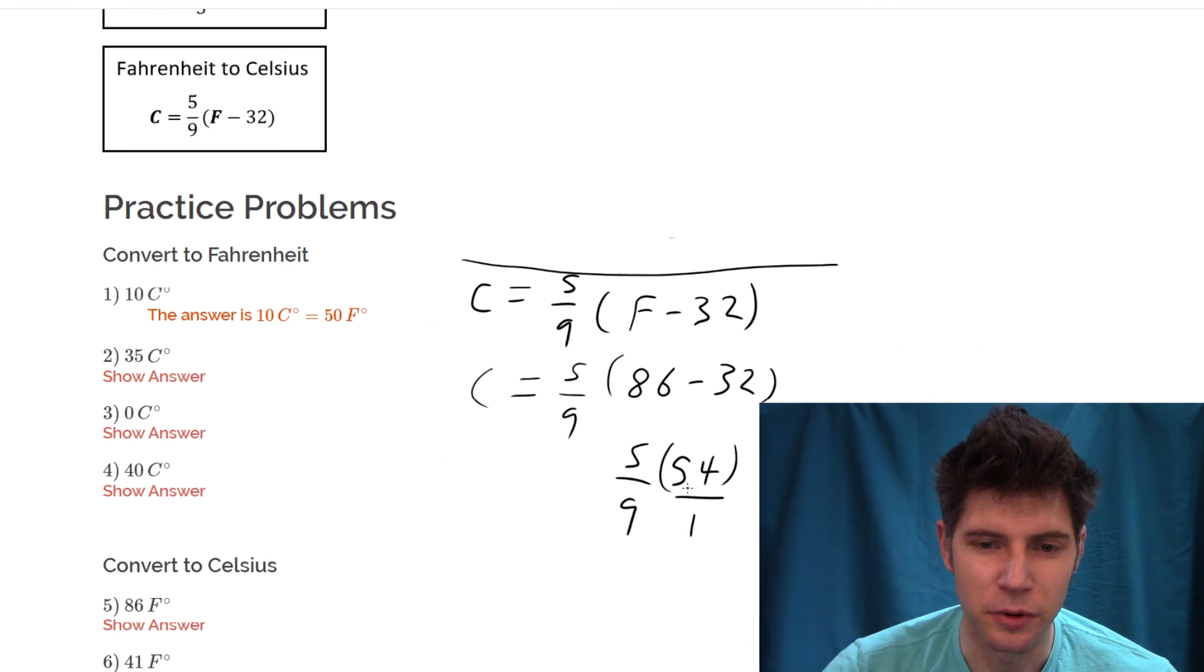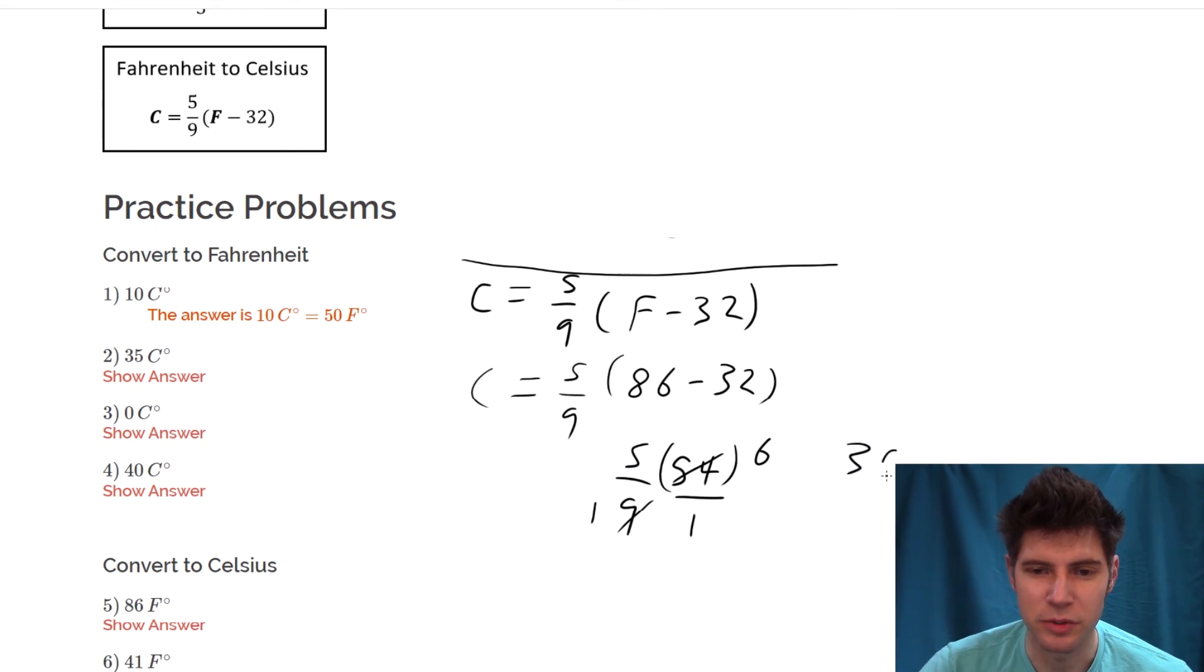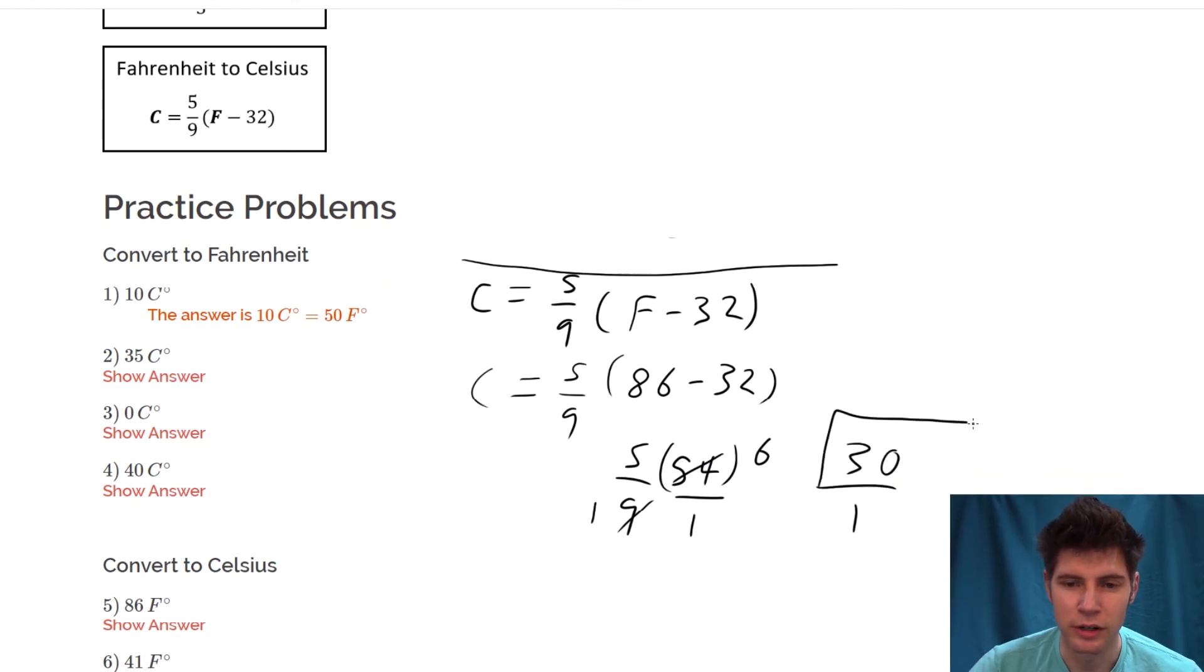You can think of 54 as 54 over one. This nine and this 54—nine goes into both of these. So the nine will change into a one and the 54 will change into a six. Now we have five times six, which is 30 over one. So the answer is 30 degrees Celsius.